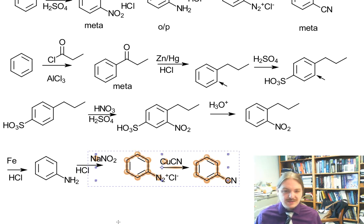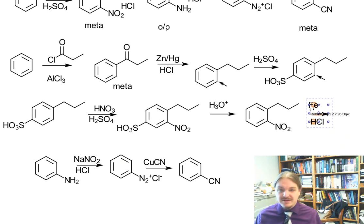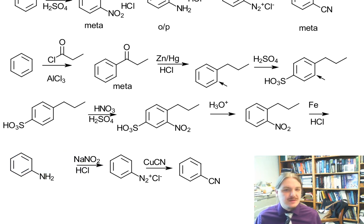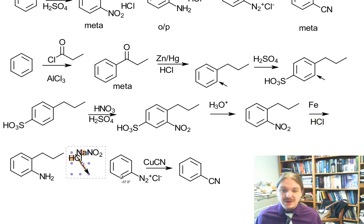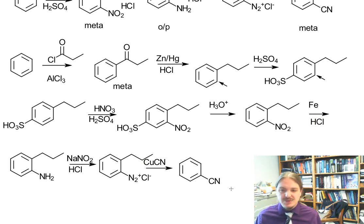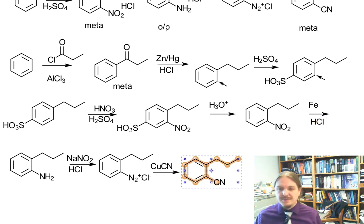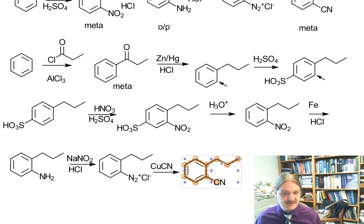I need to move things around a little bit and make room for the propyl group. So: we reduce the nitro group to the amine; we react it with sodium nitrite and hydrochloric acid to make the diazo salt; we react the diazo salt with copper cyanide, which replaces the diazo group with the cyanide. This is my full synthesis, and it's eight steps.